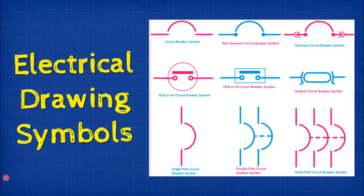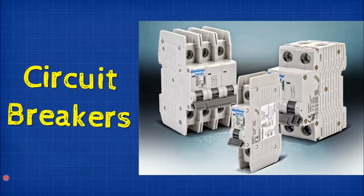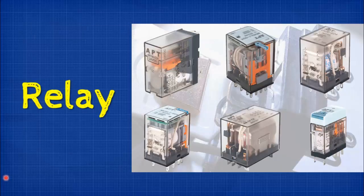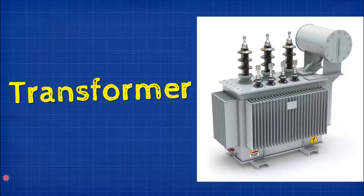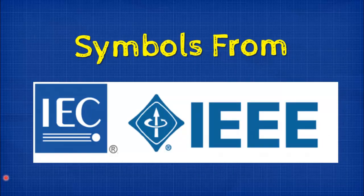Hello viewers, today we will see some common drawing symbols for the electrical devices which are used in making electrical drawings. This will include different types of circuit breakers, fuses, relays and transformers. All these symbols are taken from both IEEE and IEC standards. So stay till the end of this video.